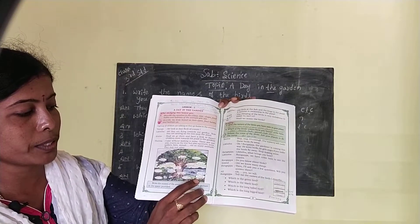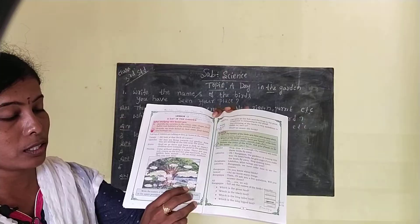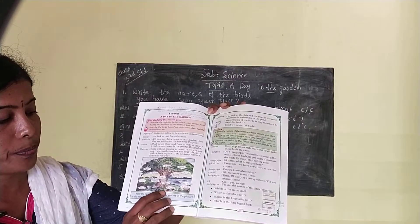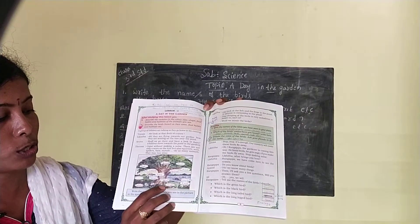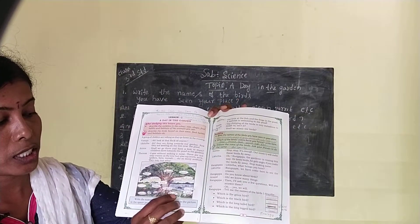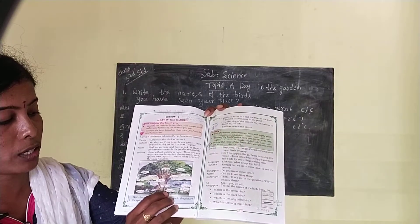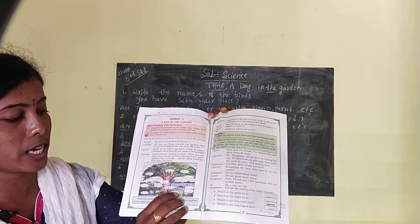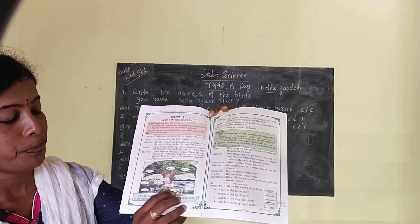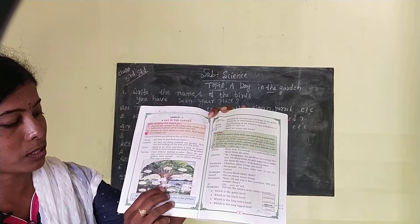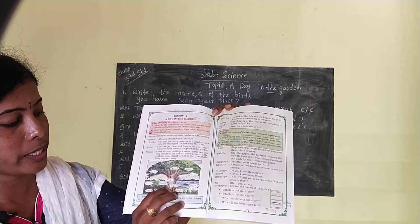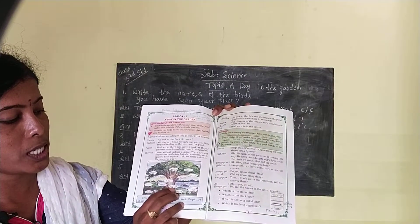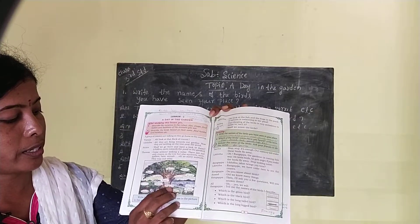Next, which animal is this? This is frog — F-R-O-G, frog. Next, which animal is this? This is snake — S-N-A-K-E. When we see this we are all scared! Snake is also there near the pond. Next, one more bird is there — that is woodpecker, W-O-O-D-P-E-C-K-E-R, woodpecker.